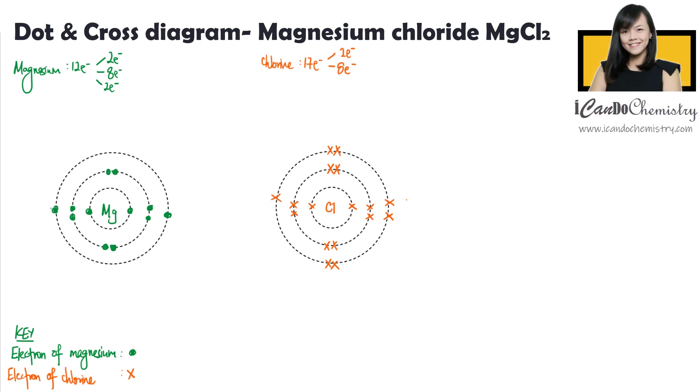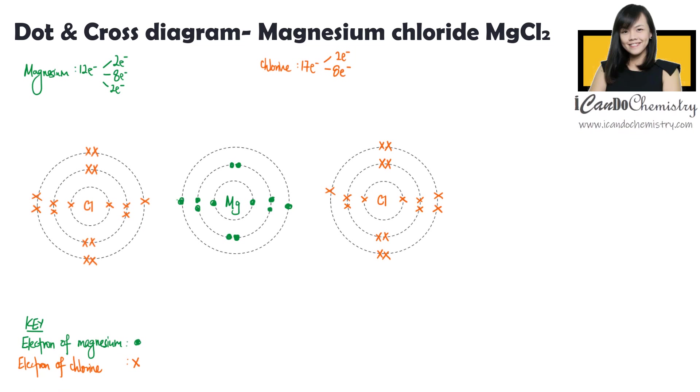Now magnesium has to give away two electrons, but chlorine can only take in one electron to form a chloride ion. Hence, we will need one more chlorine to take in both electrons from magnesium. Magnesium will donate one electron to each of the two chlorine atoms to form magnesium ion and chloride ions.